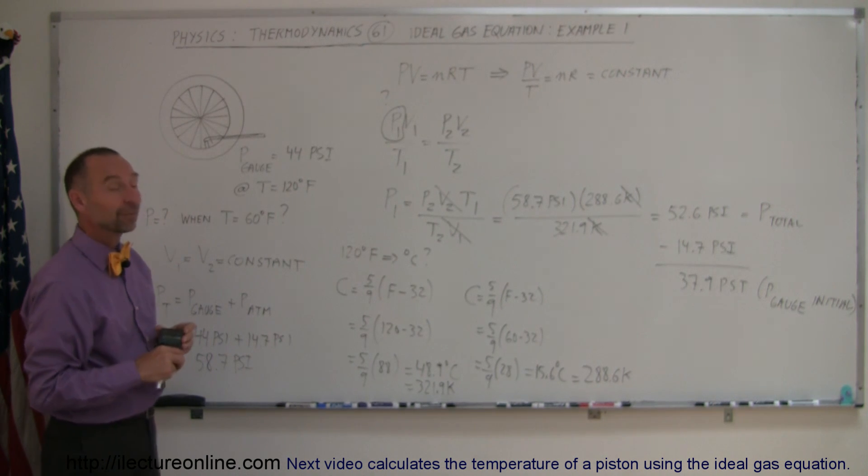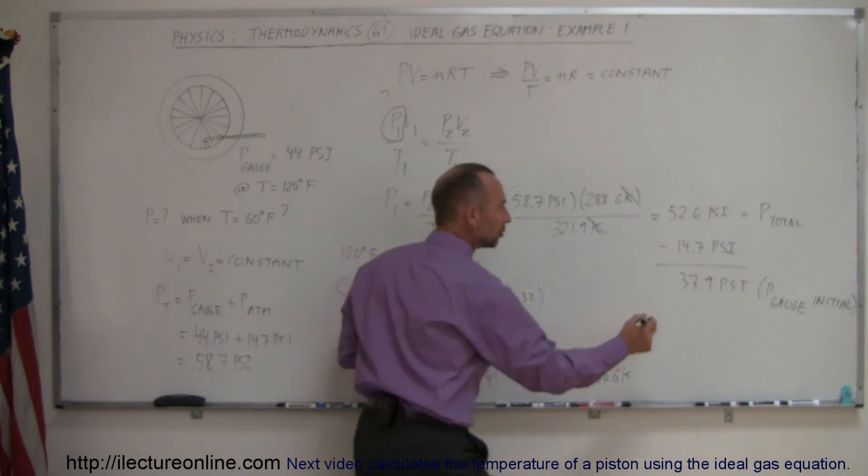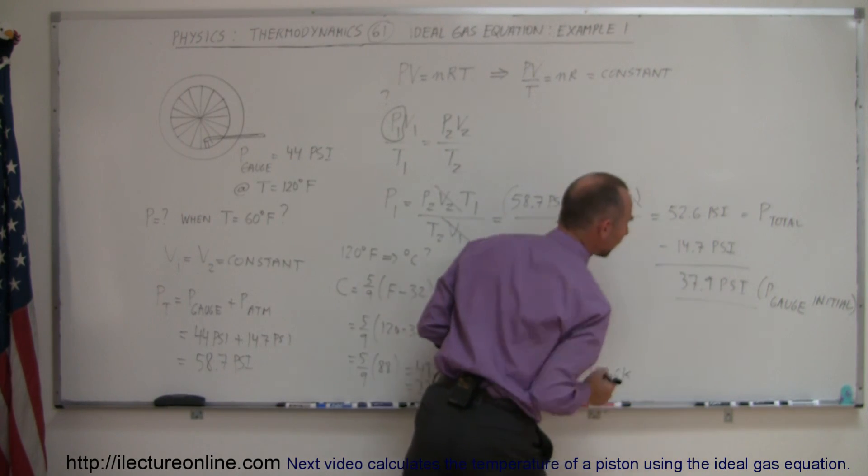Then we get a total of 37.9 pounds of pressure, or pounds of pressure per square inch, that you want to put in your tires. So there's the final answer.